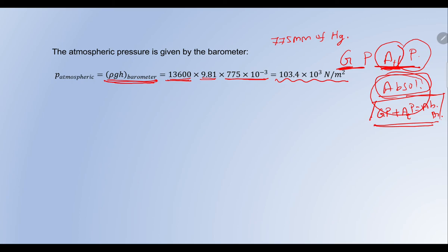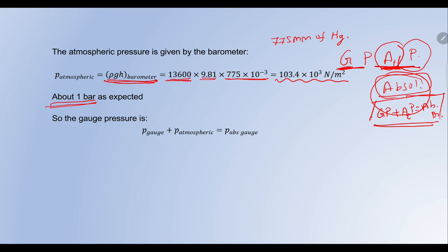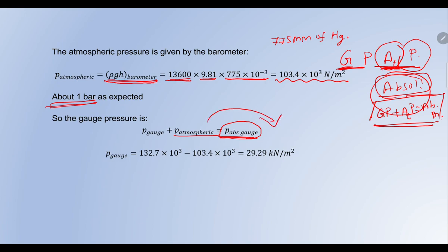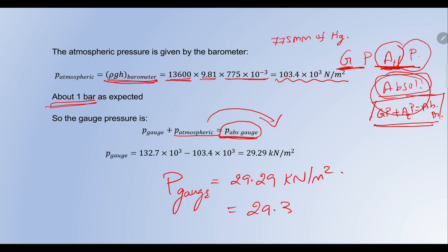We now have both the absolute pressure from the previous calculation and the atmospheric pressure. Since gauge pressure + atmospheric pressure = absolute pressure, we rearrange: gauge pressure = absolute pressure − atmospheric pressure. Substituting the values, the gauge pressure equals 29.29 kN/m², or approximately 29.3 kPa.